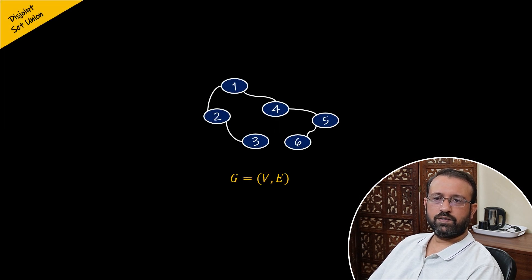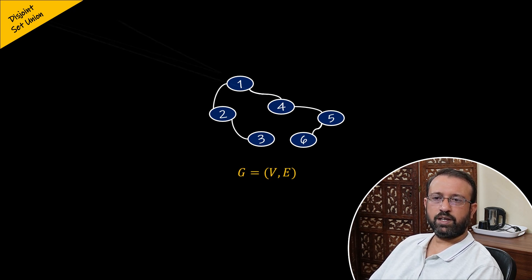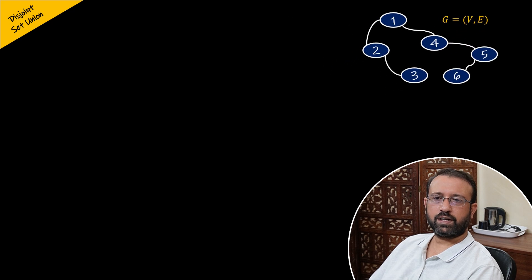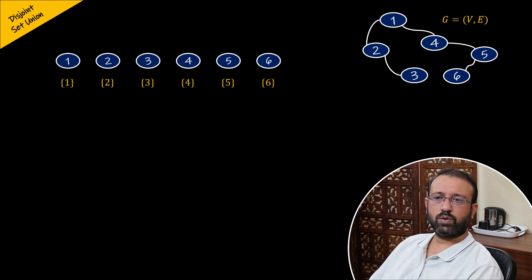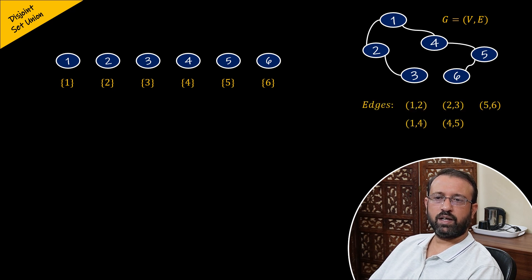Let us consider a graph G. This graph has six vertices and respective edges. Initially, we have an empty set. Since we have six vertices, we will create six disjoint sets, each containing one vertex. Then we will perform union operation on sets if there is an edge between the vertices and the vertices are not in the same set.